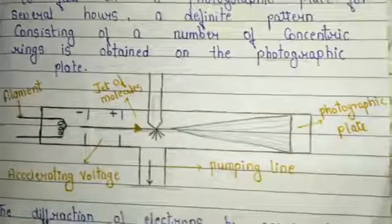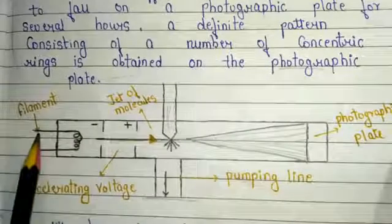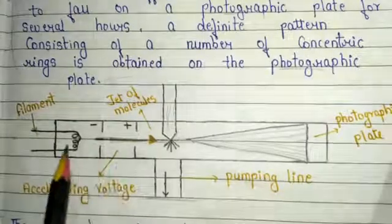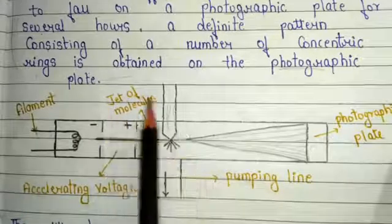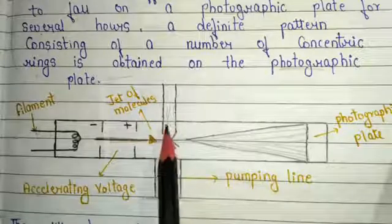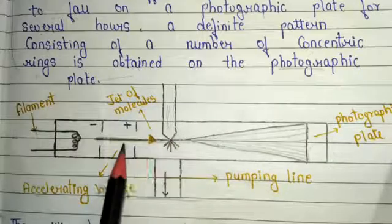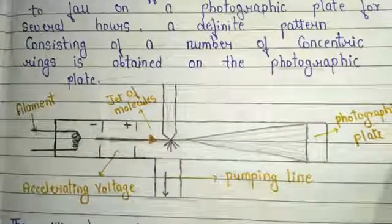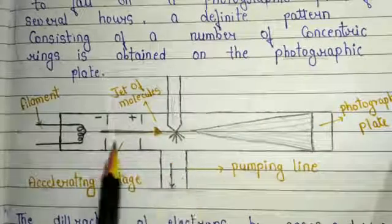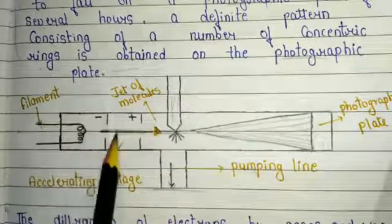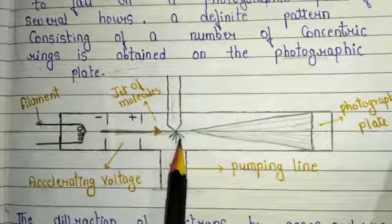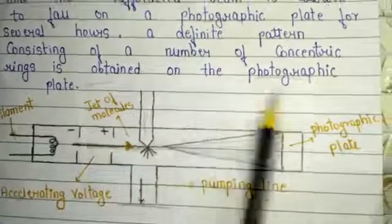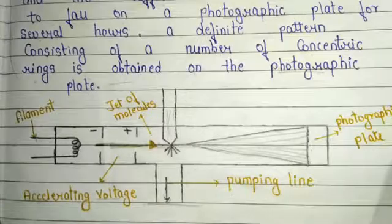The schematic diagram of electron diffraction of gases is important to understand the concept. A filament — the electron gun — is used to produce the electron beam, and an accelerating voltage is used to accelerate this electron beam. There is also a jet of molecules, which is an important part of this instrumentation to produce gas or vapors. When the electron beam is passed through the gas and vapors, it is diffracted onto the photographic plate. Pumping lines are also used in this instrumentation. After diffraction, a definite pattern consisting of a number of concentric rings is obtained on the photographic plate.